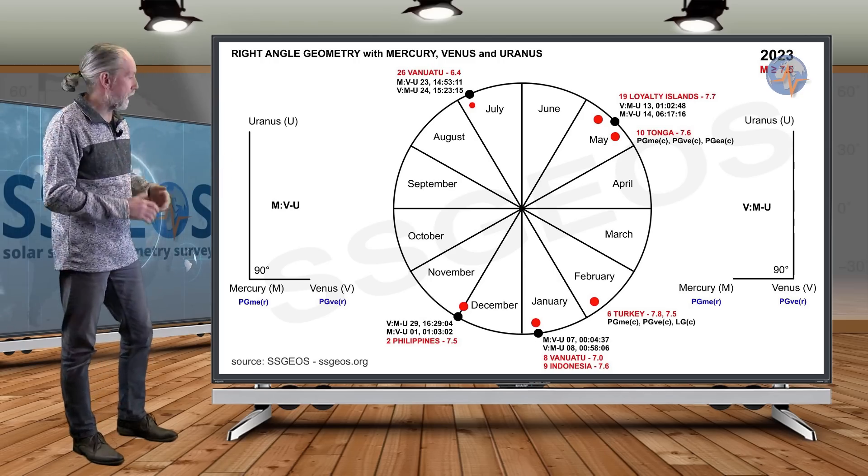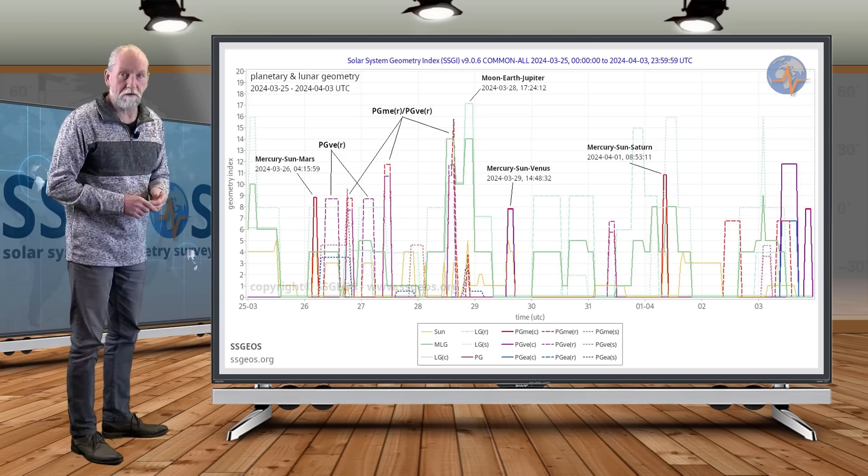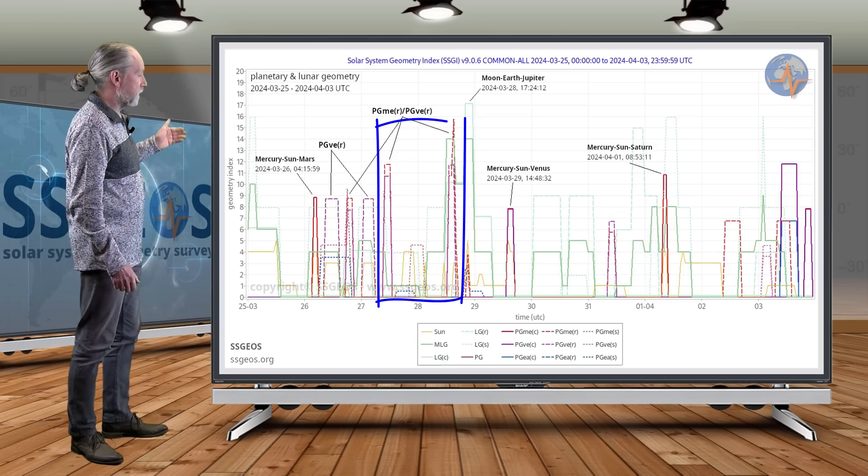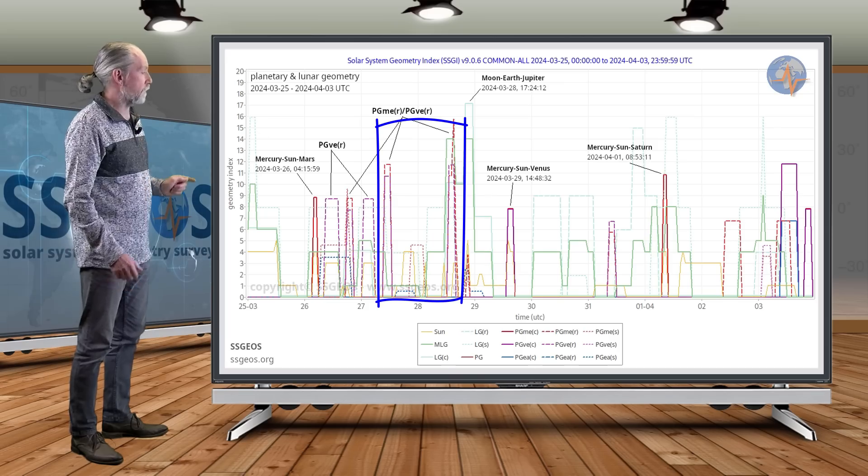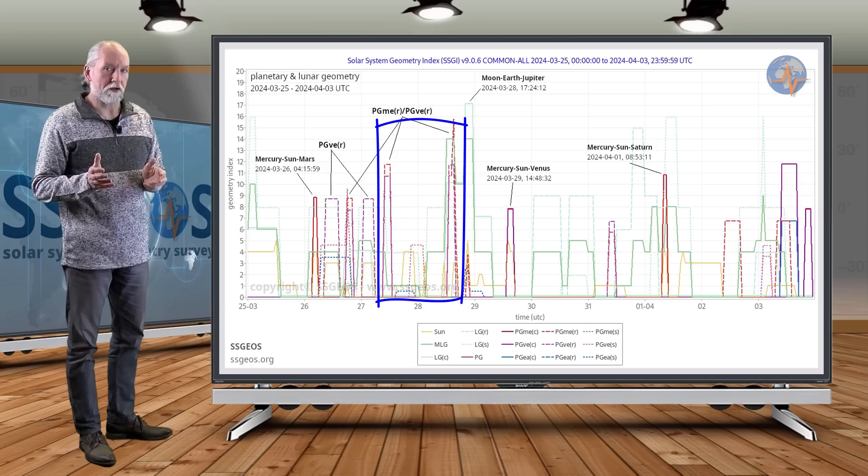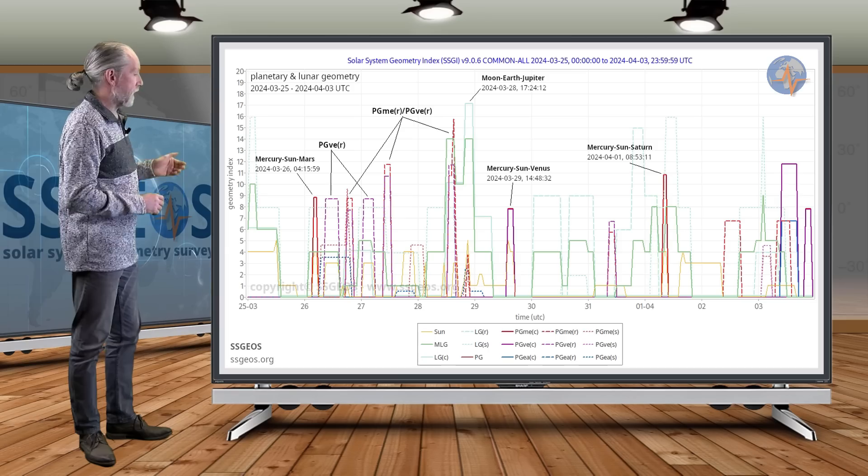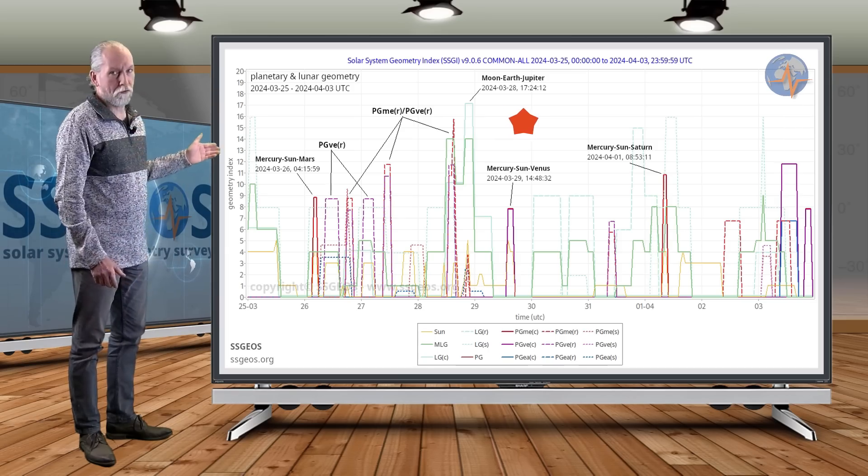So let's go back to the SAGI graph again. We have this grouping of right angles on the 26th and 27th, followed by the higher peaks on the 27th and 28th. And that is the particular geometry of Mercury, Venus, and Uranus. There can be a major seismic event following that geometry, and that could be 29th, 30th, maybe 31st.